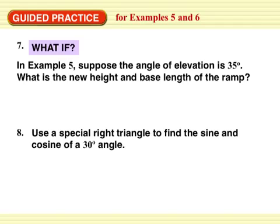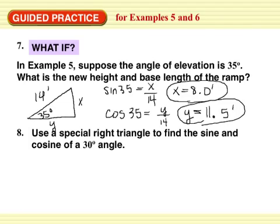Guided practice. What if, in example 5, suppose the angle of elevation is 35 degrees. Example 5 was our skate ramp. What was the length? 14 feet. The angle of elevation, 35 degrees. I think you'd have more fun or go slower. What is the new height and base? So X and Y. We can do sine of 35. I'm pushing pause. Push pause and try it on your own. There we go. We have the base and the height.